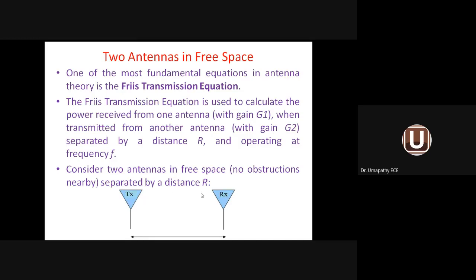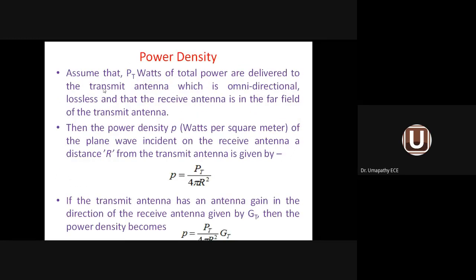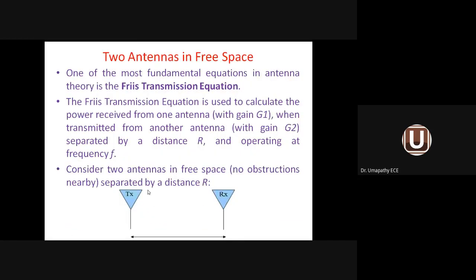Assume two antennas in free space with no obstruction between them, separated by distance R. P_t watts of total power are delivered to the transmitter antenna, which is omnidirectional (isotropic) in nature. The power received by the receiving antenna is P_r.